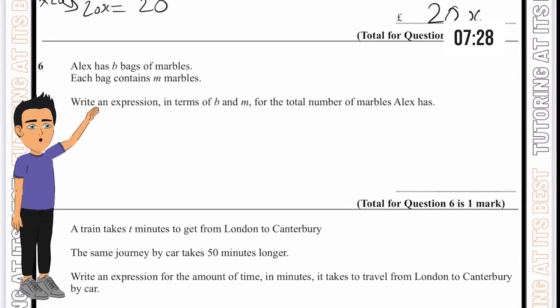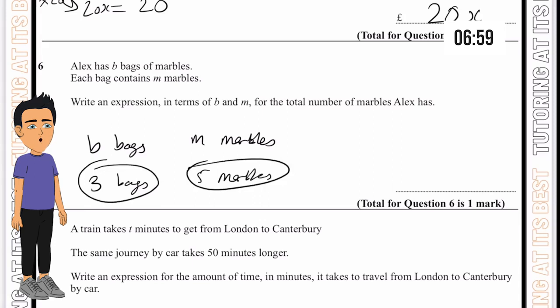Question 6. Alex has b bags of marbles and each bag contains m marbles. Write an expression in terms of b and m for the total number of marbles Alex has. b bags could be any number and m marbles could also be any number. If there's three bags and five marbles in each bag, you simply times it to get 15. So we simply write bm. If you put two letters together, that means you multiply them. So bm means b multiplied by m.